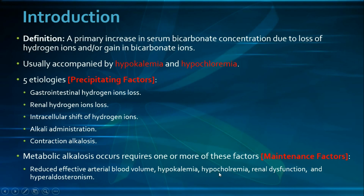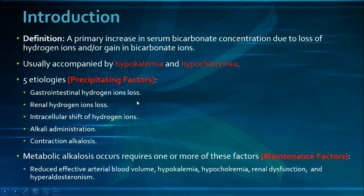Hypokalemia causes increased reabsorption and decreased secretion of bicarbonate ions in the distal nephron, maintaining metabolic alkalosis. Similarly, metabolic alkalosis is accompanied by hypochloremia, since causes such as vomiting, loss of gastric secretions, or diuretic use all result in chloride ion depletion.